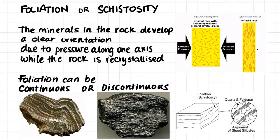But why does foliation occur? Foliation, or what is sometimes called schistosity, occurs because the minerals in the rock develop a clear orientation. The minerals will develop this orientation due to pressure along one axis while the rock is being recrystallized.